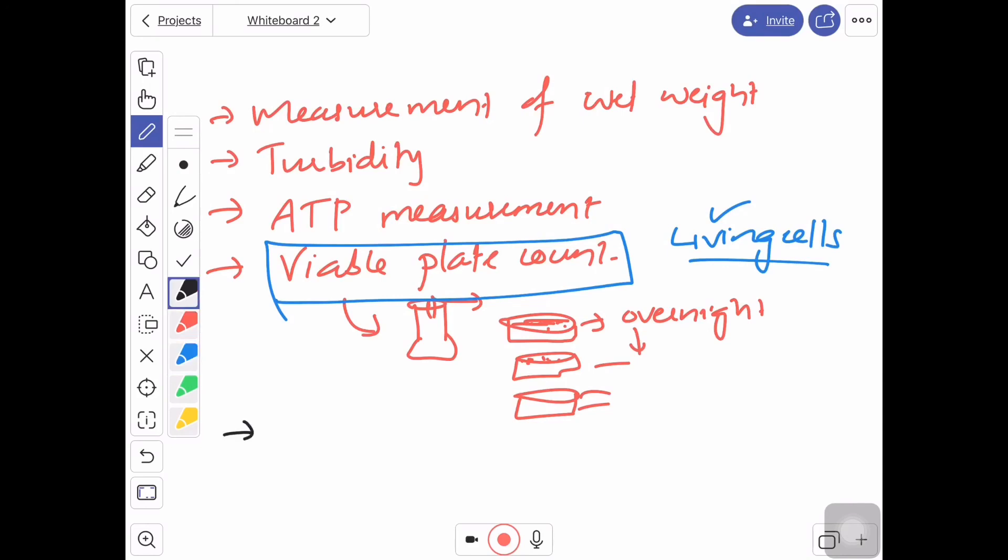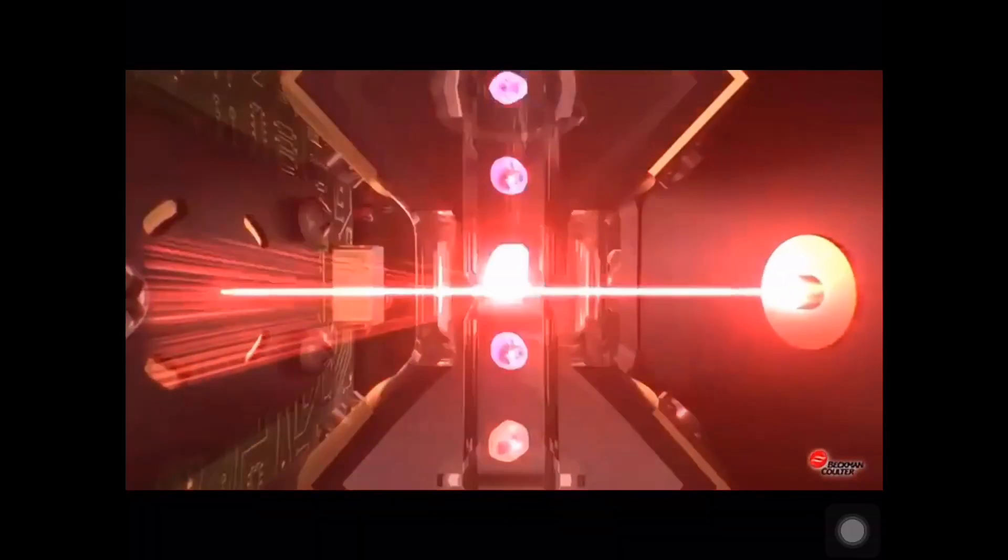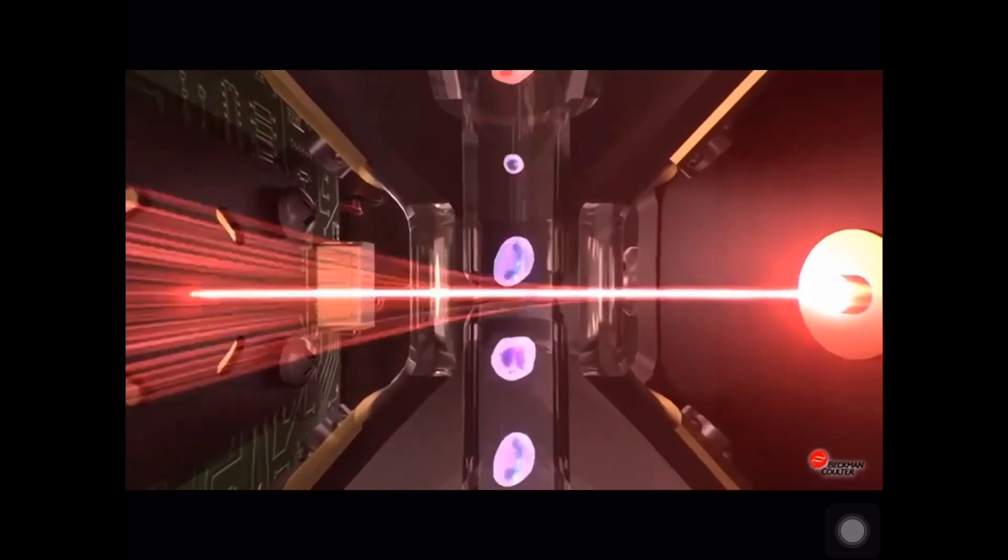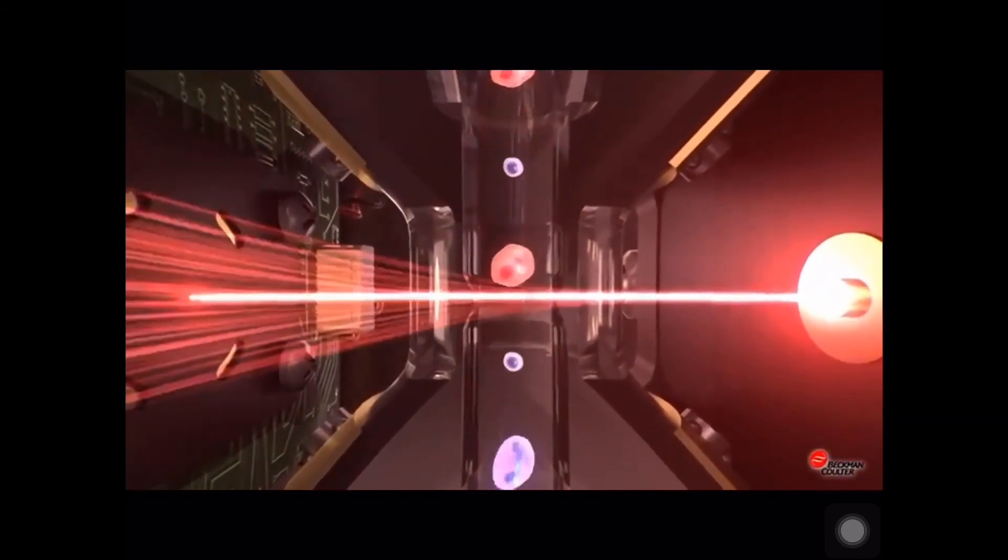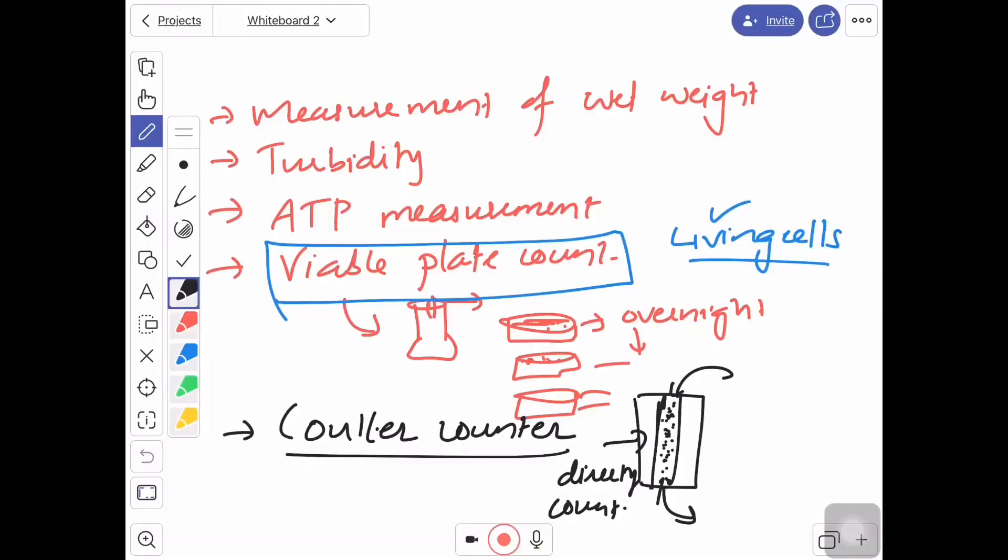Another method which is commonly used is Coulter counter. Coulter counter is a machine, an electronic device through which we pass our culture. This machine will count the cells directly by using electrical impedance generated when a cell passes through an electric field. So basically, if a cell passes through an electric field, that creates an electrical impedance. That impedance is calculated, thus you will get the total number of cells in that particular medium. Coulter counter—it is a direct cell counting machine. So these are generally different methods of cell growth measurement.